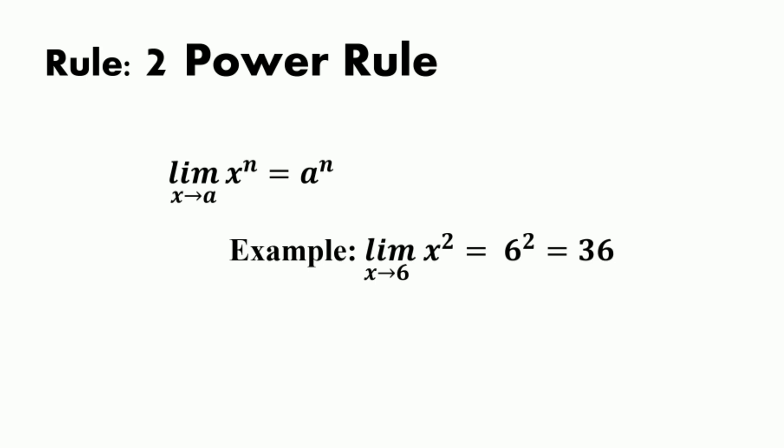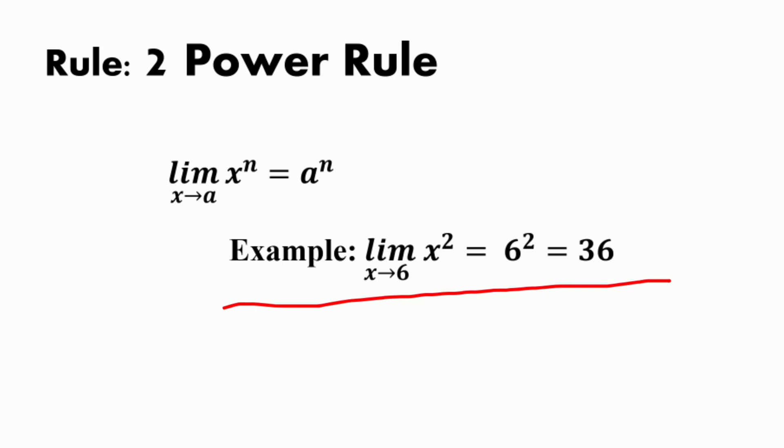The second rule is the power rule, where the limit of x raised to the power n is equal to a raised to the power n as x approaches a, where n is a positive integer. For example, the limit of x² as x approaches 6 is equal to 6² by direct substitution, which equals 36.